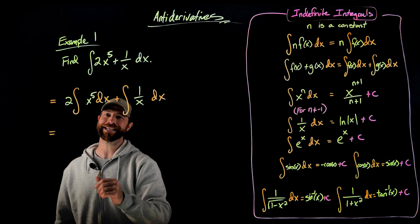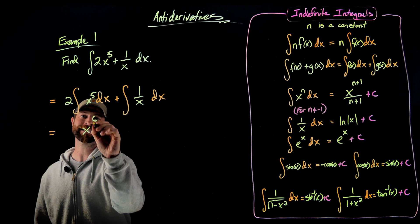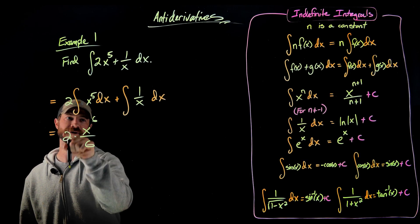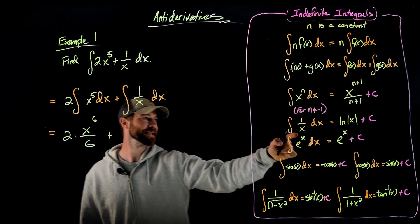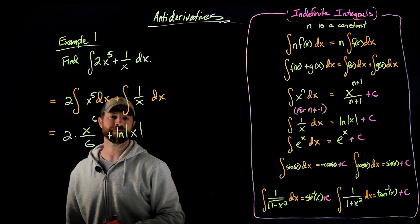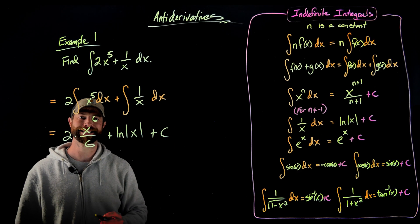And now I can integrate both of these using these rules over here. In this term right here, this integral, I'd be using this anti-power rule. So what I get is x to the sixth over 6. I am multiplying that by this 2 out front here. Then here, this 1 over x is the natural log of x, or the natural log of the absolute value of x. And then when I'm done integrating, I always got to add this plus c.